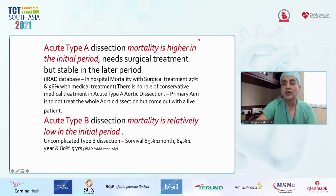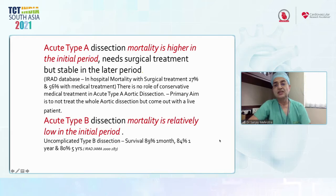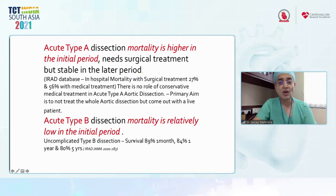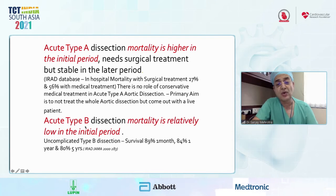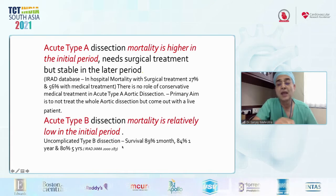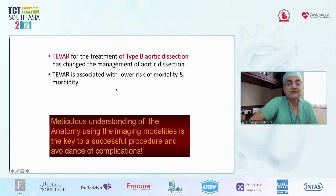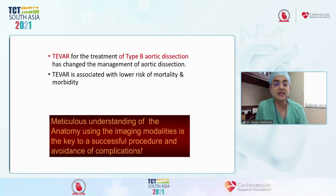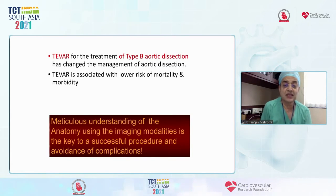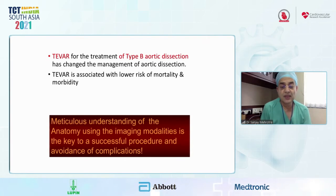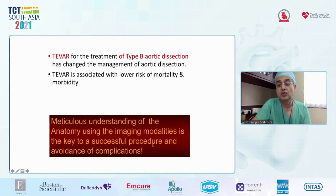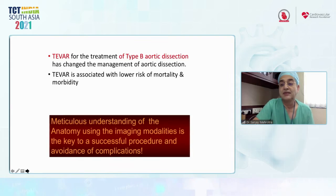Type A dissection carries very high initial mortality and requires surgical treatment, but stabilizes later. Type B dissection has relatively low initial mortality unless it falls in a high-risk category. TEVAR has become the most suited treatment for type B aortic dissection, associated with lower mortality and morbidity. It is essential to understand the anatomy using CT contrast imaging — I recommend that all treating physicians read their CTs themselves.